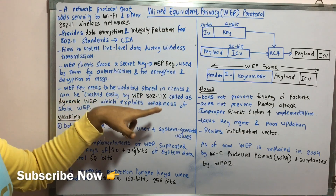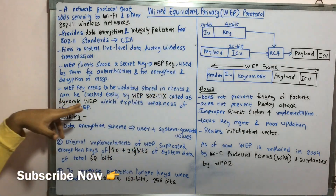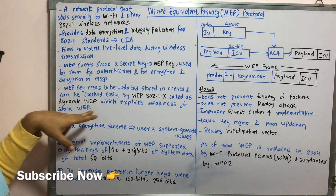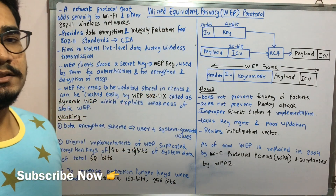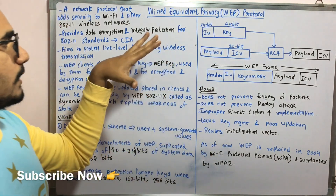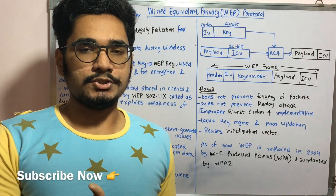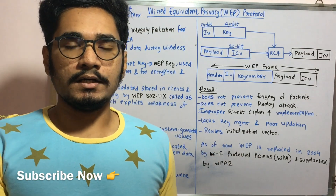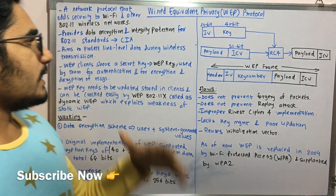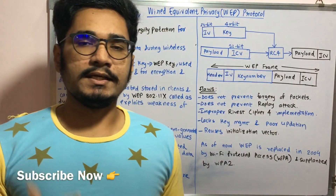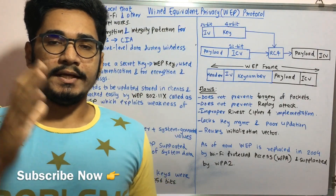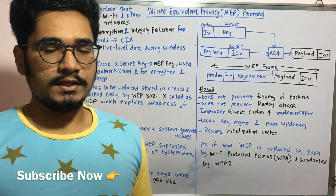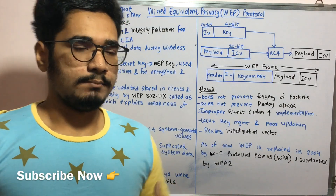The WEP key needs to be updated and it's stored in the client. It can be cracked easily with the help of 802.11X, which is called dynamic WEP, which exploits the weakness of static WEP. So WEP itself has got two variations: static WEP and dynamic WEP. Static WEP has its own limitations and can be easily cracked with the help of dynamic WEP using 802.11X.